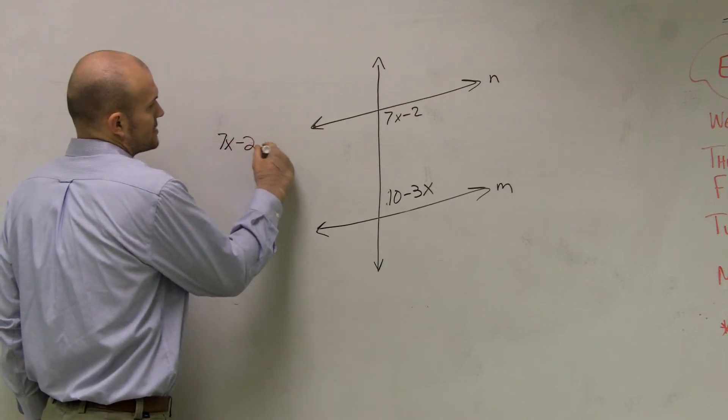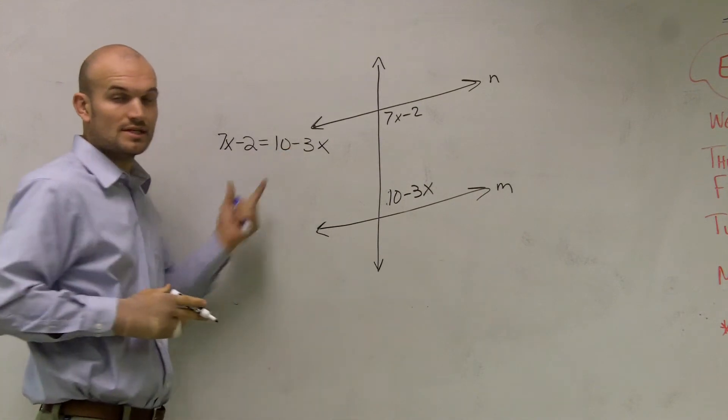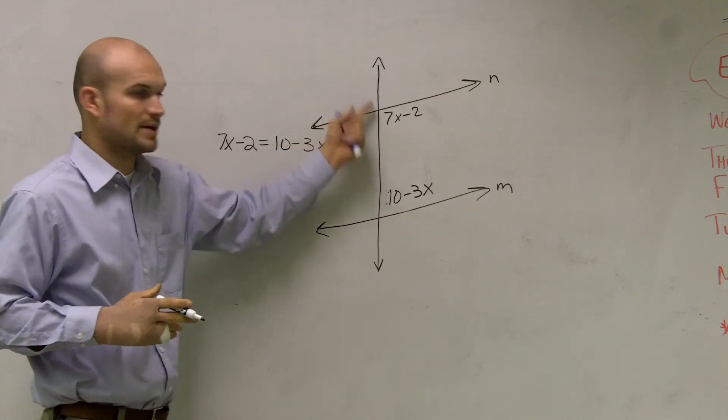So I'm going to say 7x minus 2 equals 10 minus 3x. Because when these two angles equal each other, I'll have parallel lines.